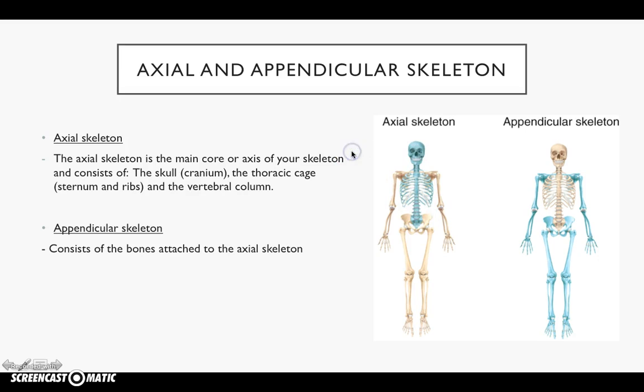And the appendicular skeleton consists of the bones attached to the axial skeleton. So your limbs are attached off the actual axial skeleton. So there are those two. If you get those down.